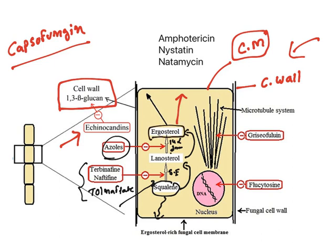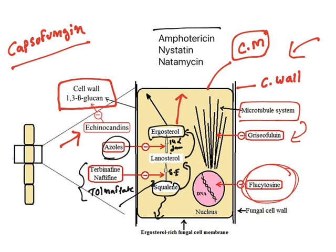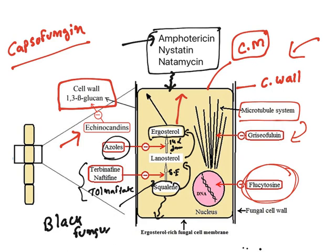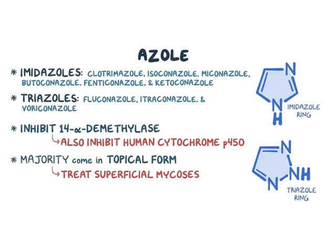Tolnaftate, terbinafine, and naftifine inhibit squalene epoxidase, increasing squalene levels which cause toxicity to the cell. Azoles inhibit 14-alpha-demethylase, so lanosterol-to-ergosterol conversion is blocked and the cell membrane is not formed. The microtubule system is inhibited by griseofulvin, while DNA is inhibited by flucytosine. Amphotericin B, nystatin, and natamycin have amphiphilic nature; they insert into the cell membrane and cause damage. Amphotericin B was widely used to treat black fungus that occurred during COVID infection.